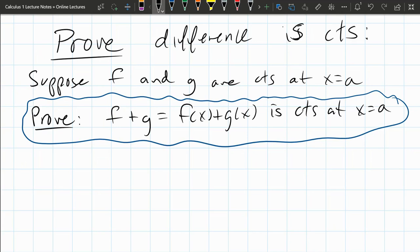From here, I'm just going to apply, what's the definition mean? So what does it mean to be continuous? That means the limit equals the value. So that means the limit as x approaches a of f of x is equal to f of a. That's what the definition of f being continuous.